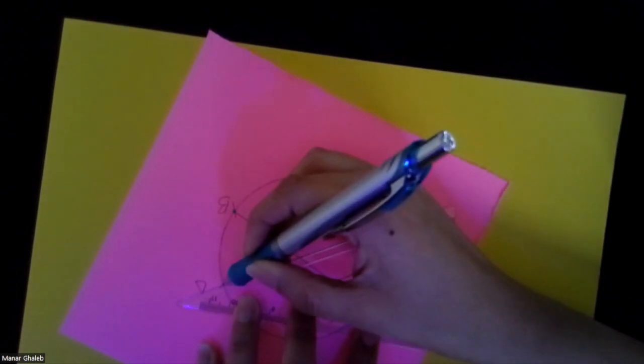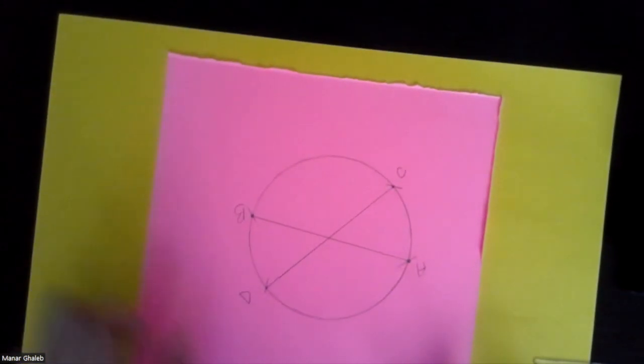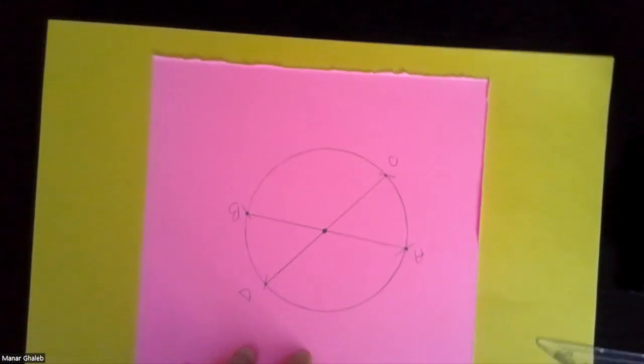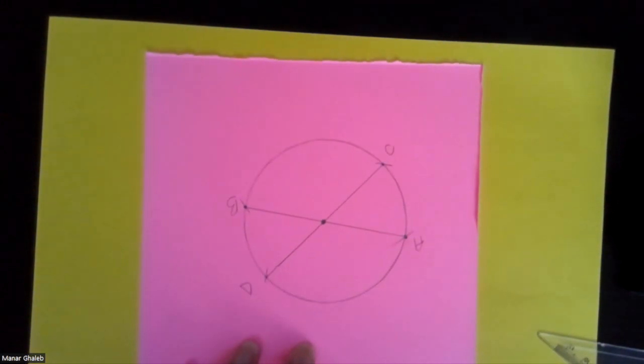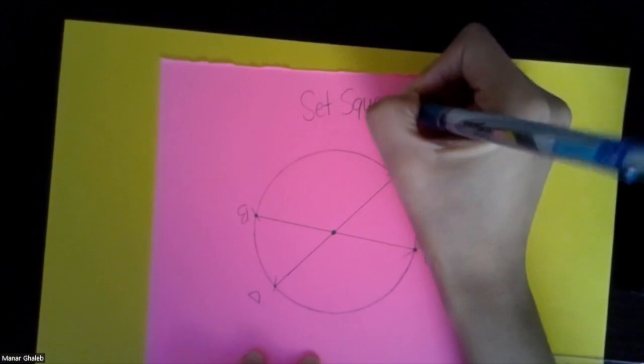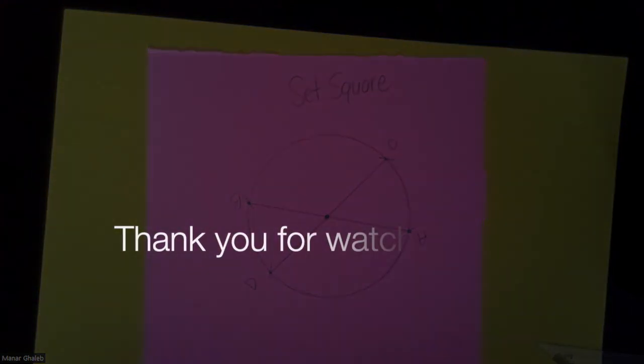And now I've just created another diameter. So the point in which these two lines intersect, so right here, this is called the center of the circle or the midpoint of the circle. So what we did right now is we use the set square method to find the midpoint or center of a circle. Let's check it out first.